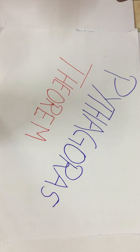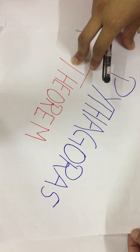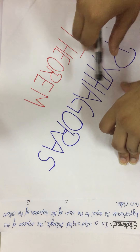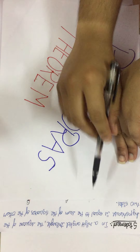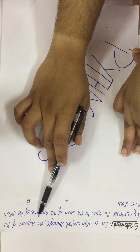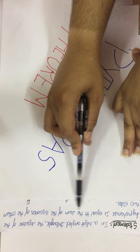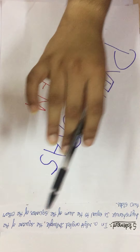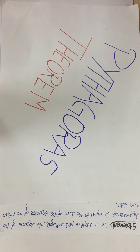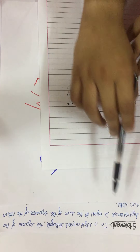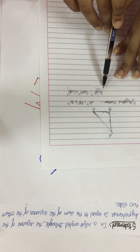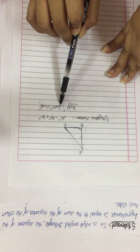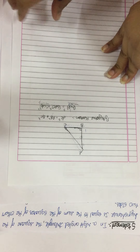Now let's dive into the Pythagoras theorem — the big boss. Let's see the statement: in a right-angled triangle, the square of the hypotenuse is equal to the sum of the squares of the other two sides. So we know this — hypotenuse squared is equal to side squared plus side squared. This is our statement.